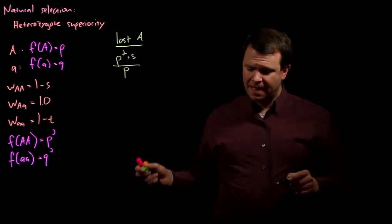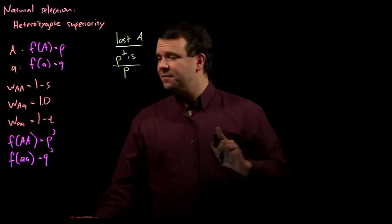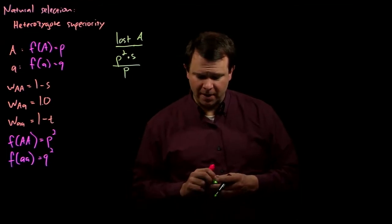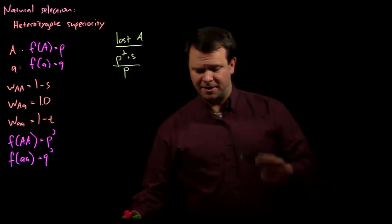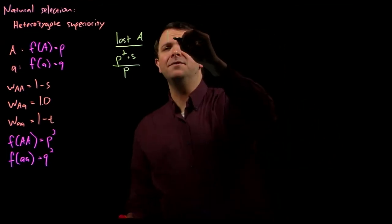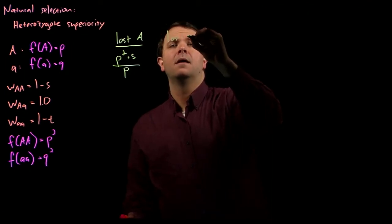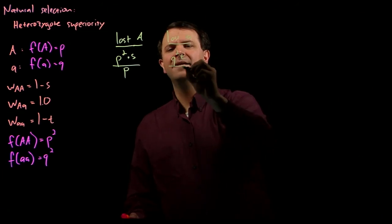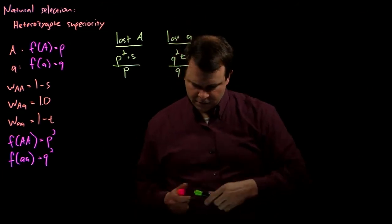Similarly, at equilibrium, the frequency of the homozygous recessive genotype is q squared. And so, the proportion of recessive alleles that are lost each generation is q squared times t over q.